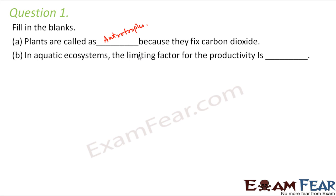In aquatic ecosystems, the limiting factor for productivity is light. Producers are the main group of organisms responsible for production, and they produce by photosynthesis, so they need light. But in an aquatic ecosystem, light is the limiting factor because there is not too much abundance of light.